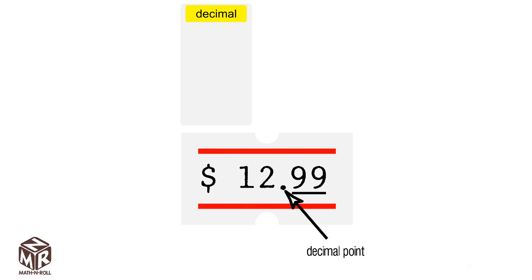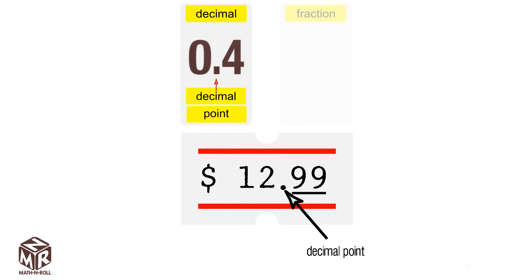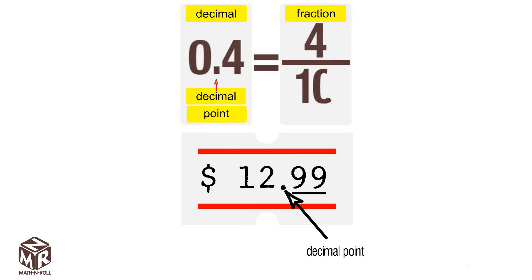Let's look at an example. 0.4 is our decimal. We can rewrite 0.4 as a fraction: 4 over 10, or 4 tenths.